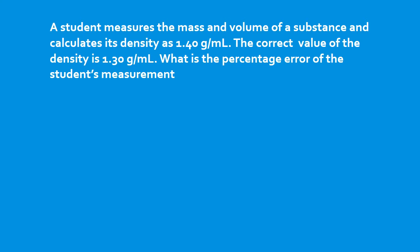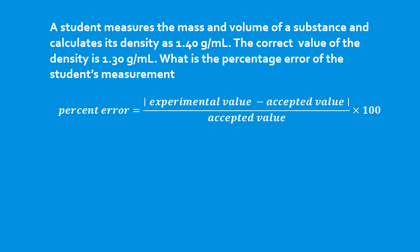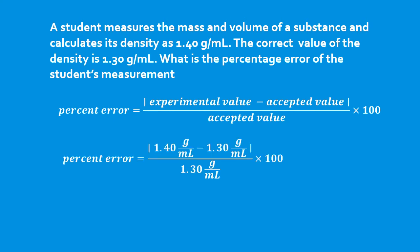In this example, a student measures the mass and volume of a substance and calculates its density as 1.40 grams per milliliter. The correct value of the density is 1.30 grams per milliliter. What is the percentage error? We take the absolute value of 1.40 minus 1.30, divided by the accepted value 1.30, times 100. The units — grams per milliliter — cancel out, so percent error has no unit except percent. That gives us 7.69%.